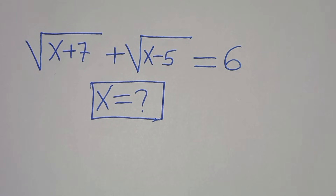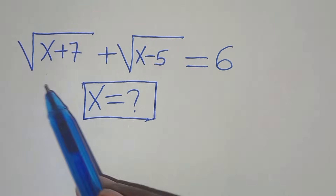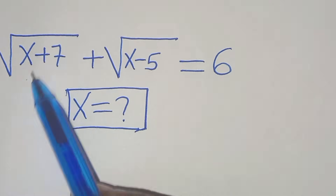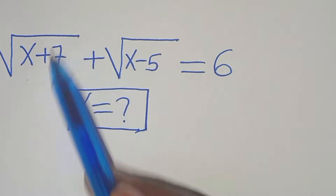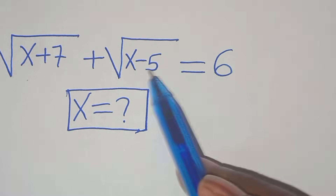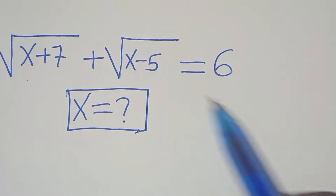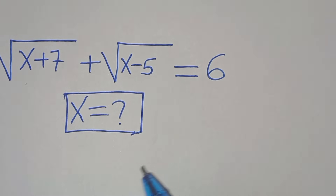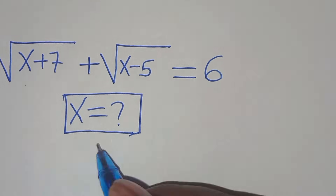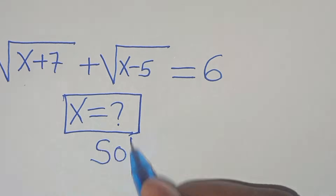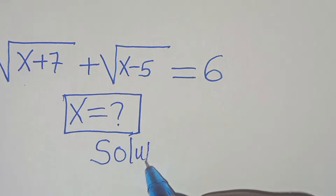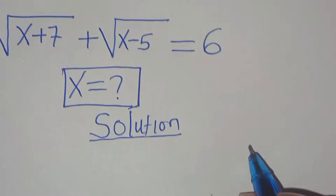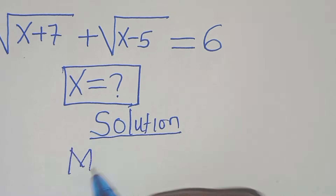Hello everyone, you're welcome to solve this nice square root algebra problem: the square root of x plus 7, plus the square root of x minus 5, is equal to 6. So what is the value of x? Now let's provide a solution. To solve this math problem, we are going to apply three methods.